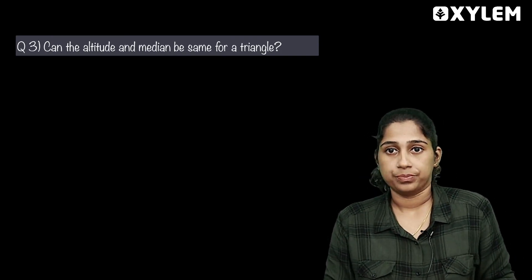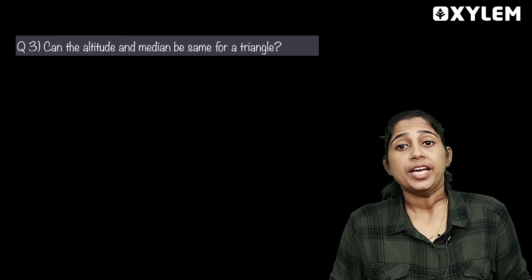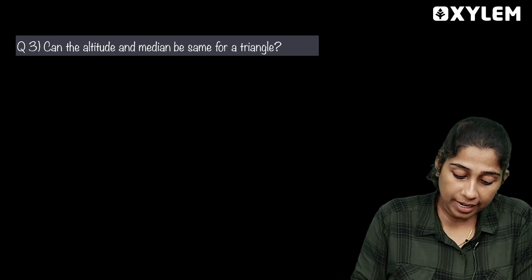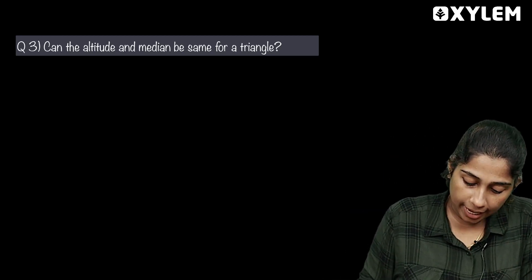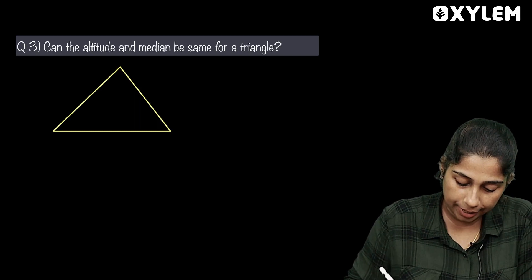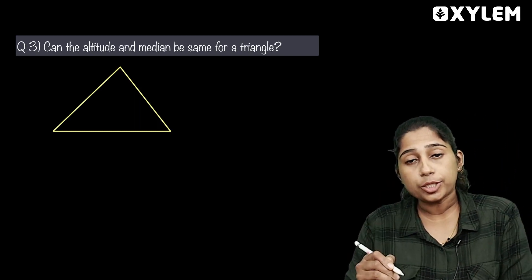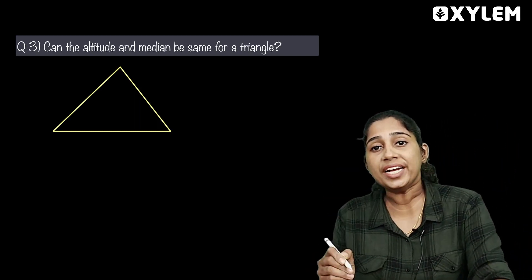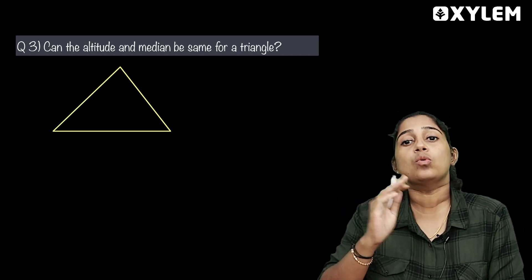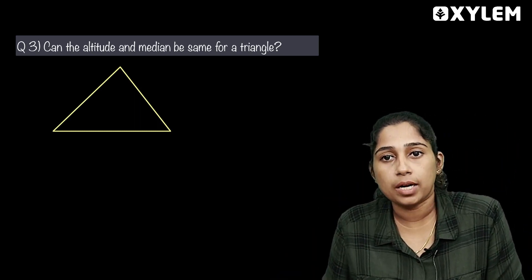That's it. For an equilateral triangle — it has three equal sides. Altitudes and medians are the same.